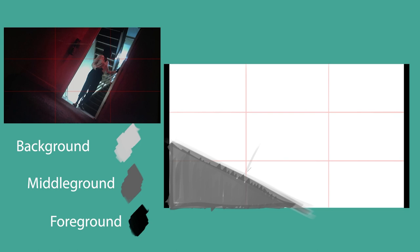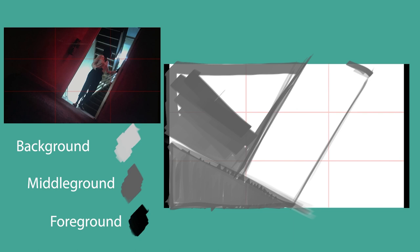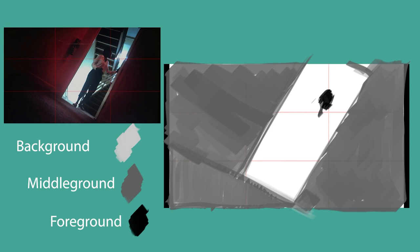Dutch angle is literally just when the camera is tilted, and it creates a feeling of suspense. We don't see the world tilted, so just because someone tilted the camera we get an unconscious sense that something's wrong — it adds a lot of tension. If you need examples, watch scary movies or any action movie where they're trying to build a suspenseful moment.